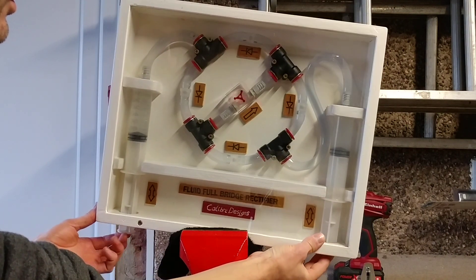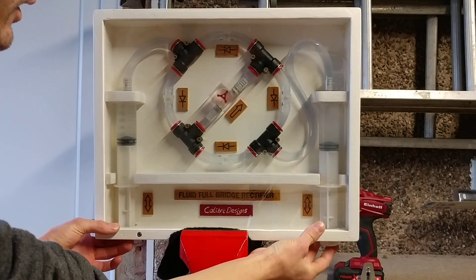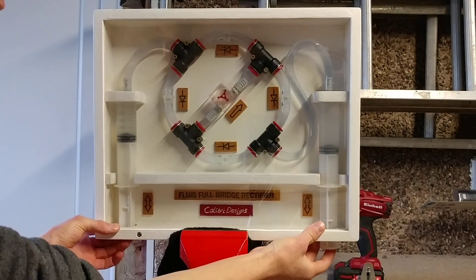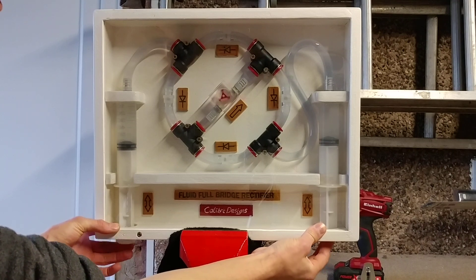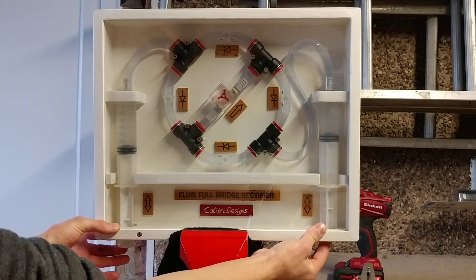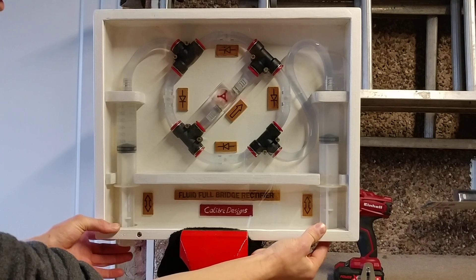As you can see, it turns AC current into DC current by alternating the flow on both sides of the syringes.